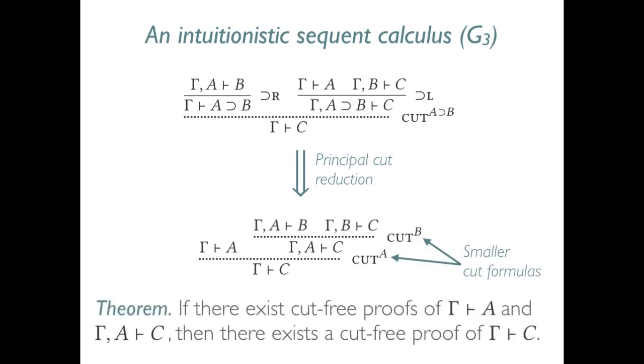Our theorem then is that if there exist cut-free proofs of gamma turnstile A and gamma A turnstile C, then there exists a cut-free proof of gamma turnstile C.